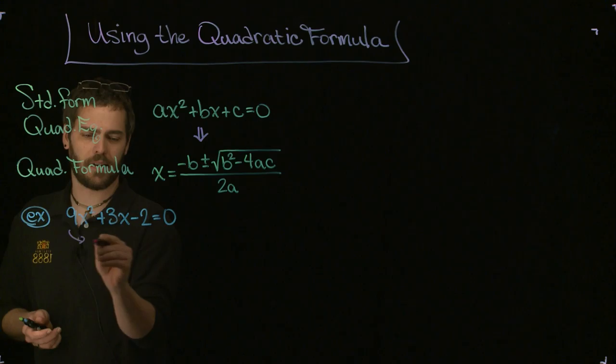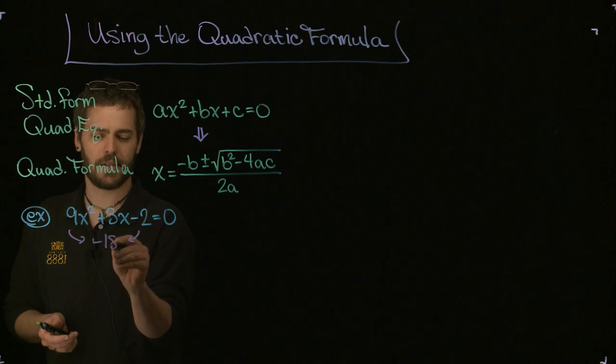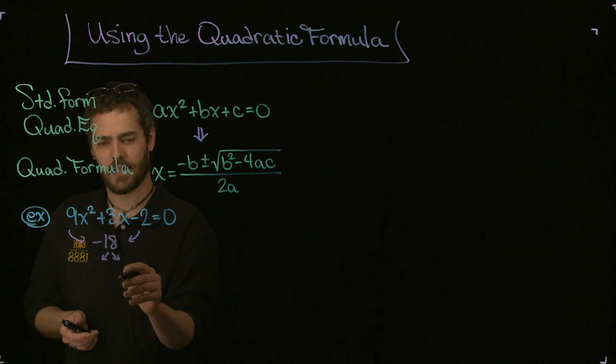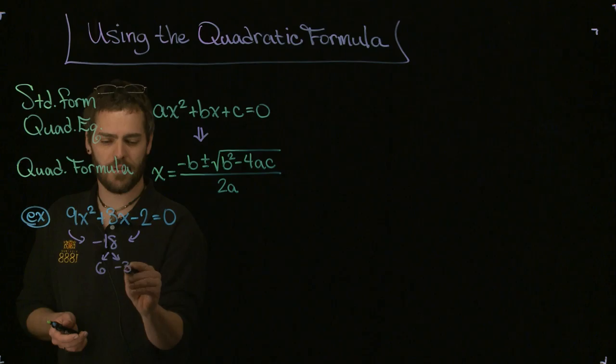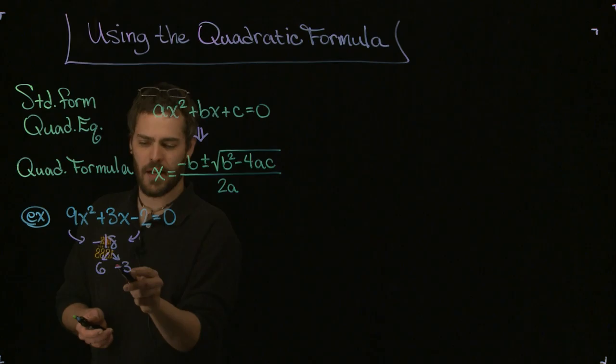So let's start like this. Multiply these two guys together, the 9 and the negative 2, that gives me negative 18. Now what times what gives me negative 18 that also adds to give me positive 3? It turns out that 6 times negative 3 will do it. That multiplies to give me negative 18 and also adds to give me positive 3.